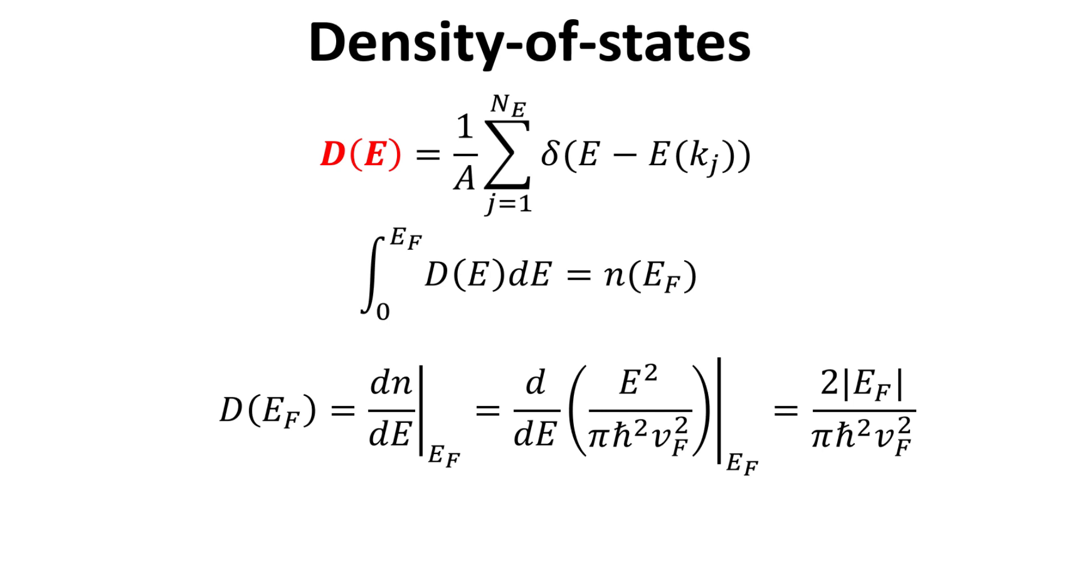Substituting in the expression for n we obtained previously, and using the linear dispersion relation of graphene, we arrive at an explicit expression for d as shown. The electronic density of states in graphene is linear in energy E. d is a positive quantity, thus we only take the absolute of the energy.